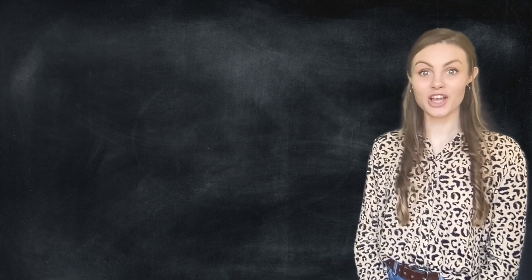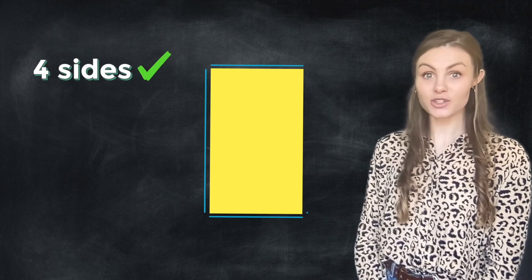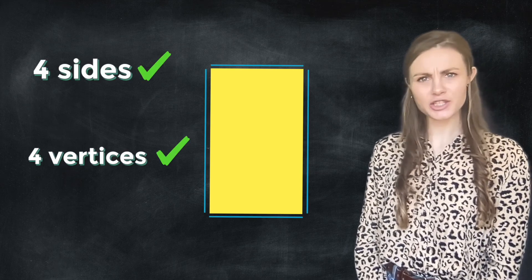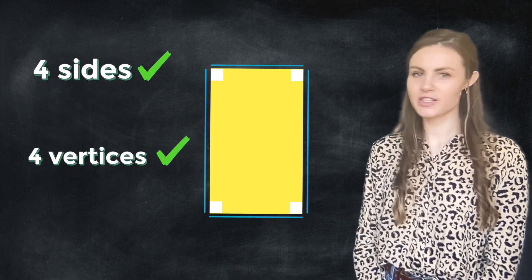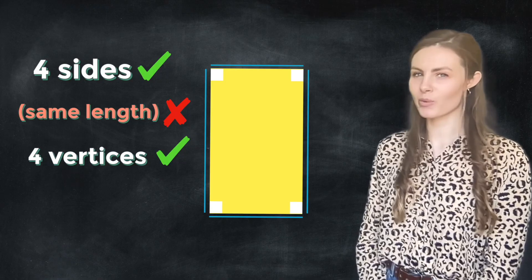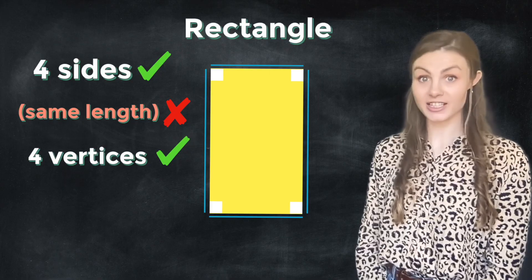Okay, let's have a look at another shape. This one has also got four sides and it's got four vertices. Does that make it a square? Hmm. Hang on. The sides aren't all the same length. And remember, we said that's really important. This isn't a square. This is called a rectangle.